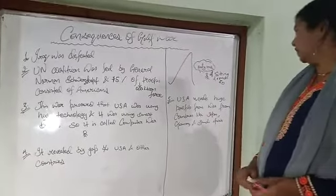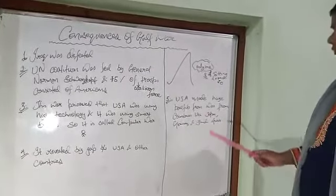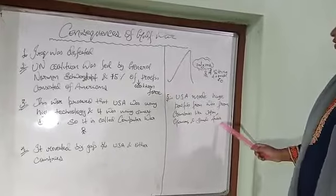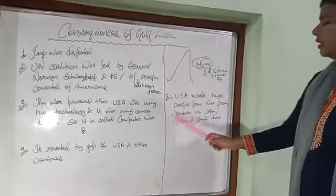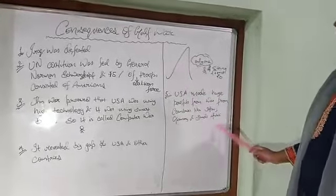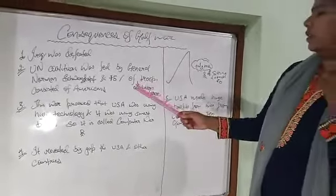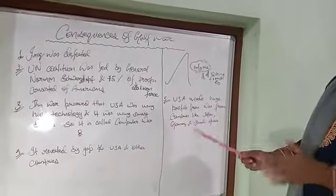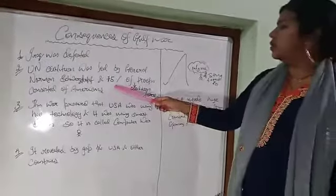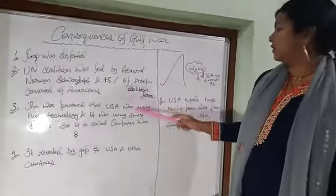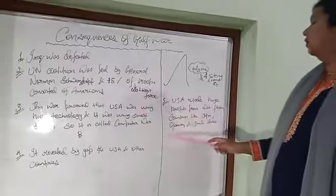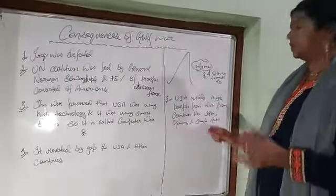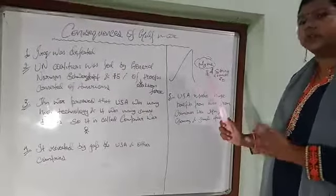The USA made huge profits from the war. Countries like Japan, Germany, and Saudi Arabia collectively provided funding so that the USA could attack Iraq. Since 75 percent of the soldiers were American, the USA benefited significantly as a result.